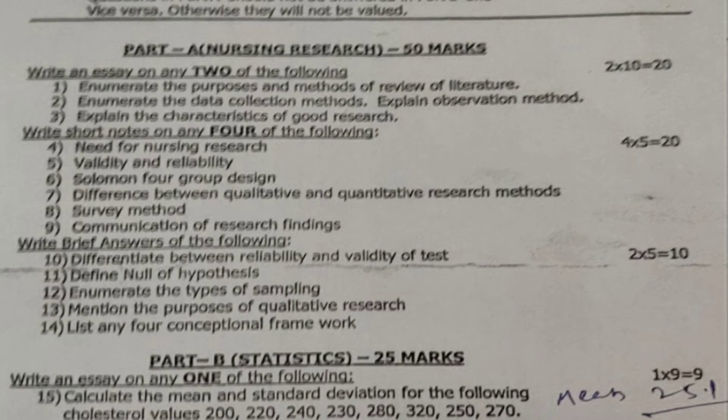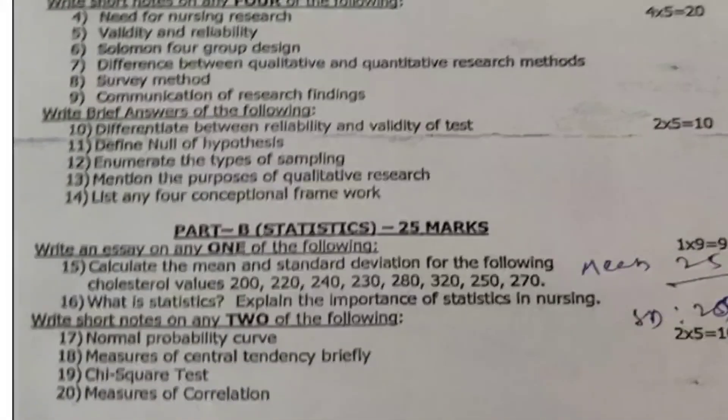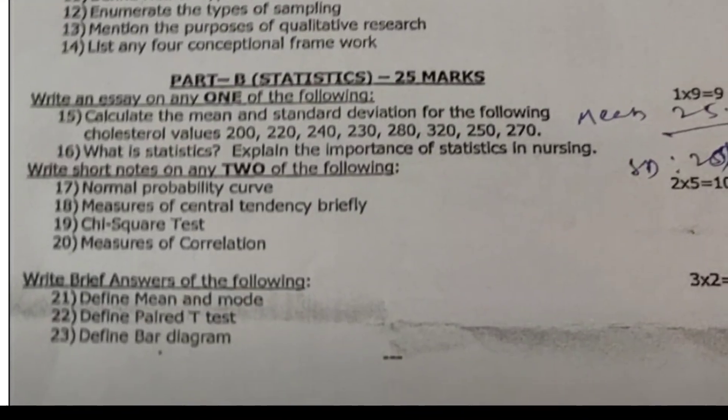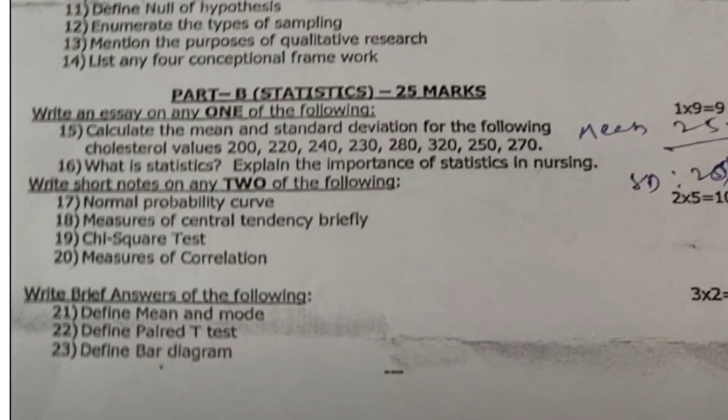The minimum pass marks for Part A nursing research is 25 out of 50. Moving on to Part B — Statistics — it is for 25 marks. The minimum pass percentage is 12.5 marks, which rounds off to 13.